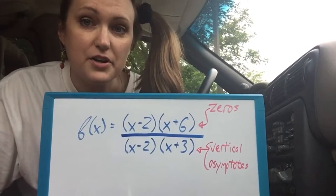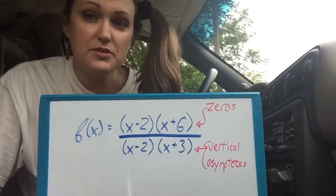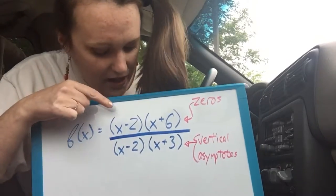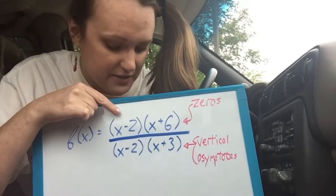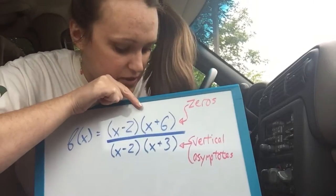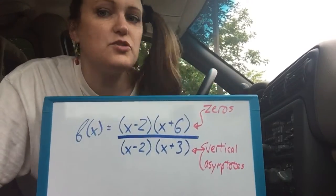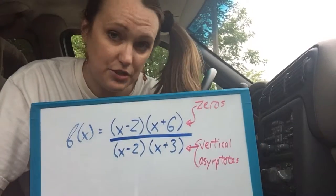The things on top are gonna tell you your zeros, just like when you did quadratic functions. You have a zero in your graph at x is positive 2 and another one at x is negative 6. Just like normal, just read the top. Don't look at the bottom if you're talking about zeros.